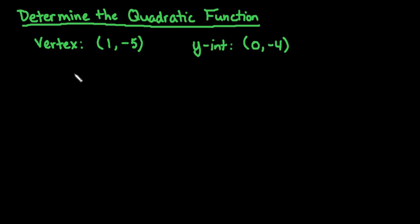Hi! For this video, what we're going to do is determine the quadratic function that has a vertex of 1, negative 5 and the y-intercept of 0, negative 4.